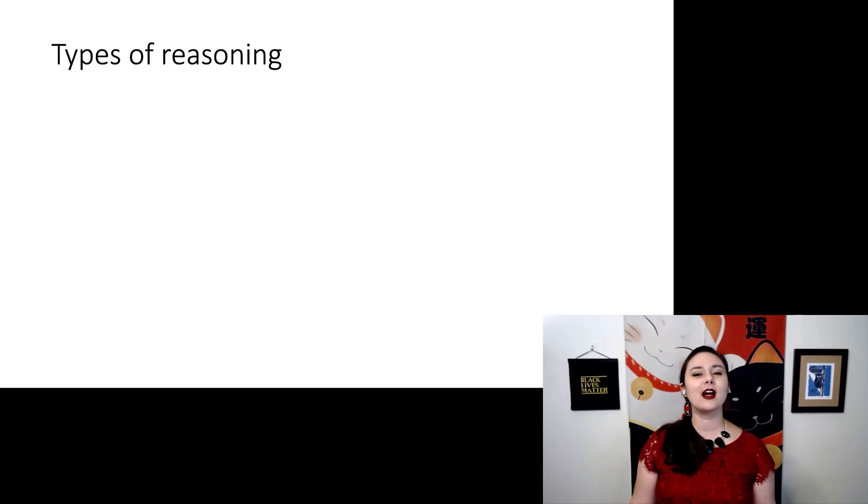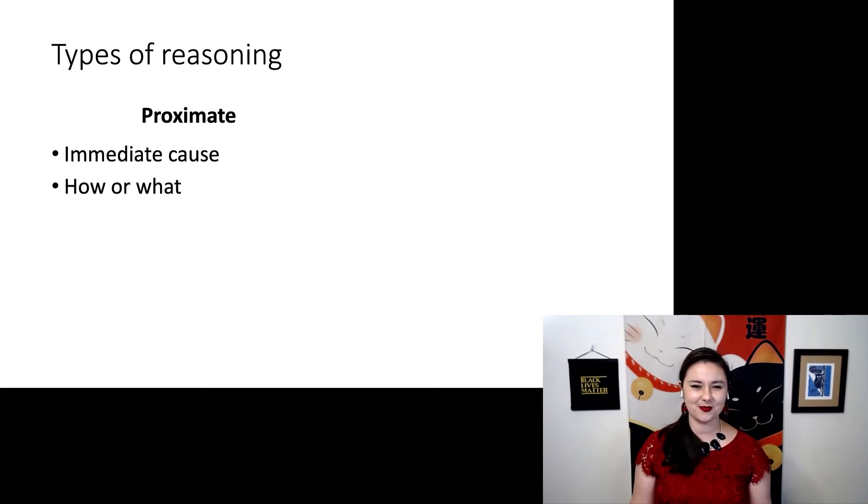But let's go back to those types of reasoning I mentioned, proximate and ultimate reasoning. Proximate reasoning is when you're looking at the immediate cause. Think of this as a how or a what question. Ultimate reasoning, now we're looking at the evolutionary cause. This is a why.